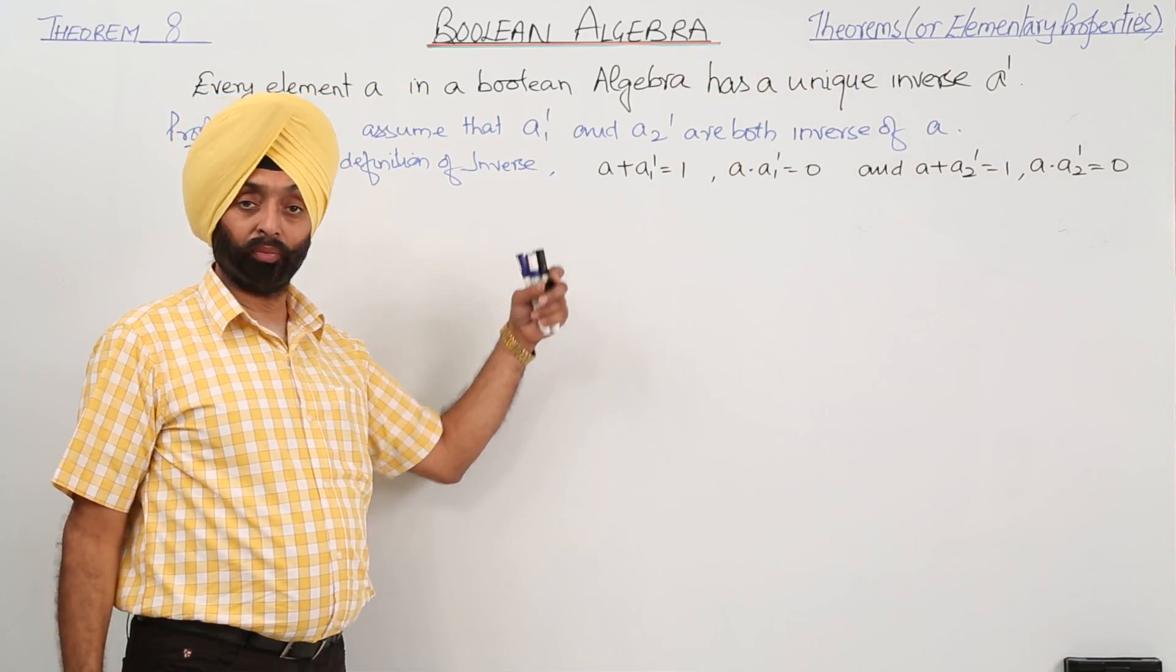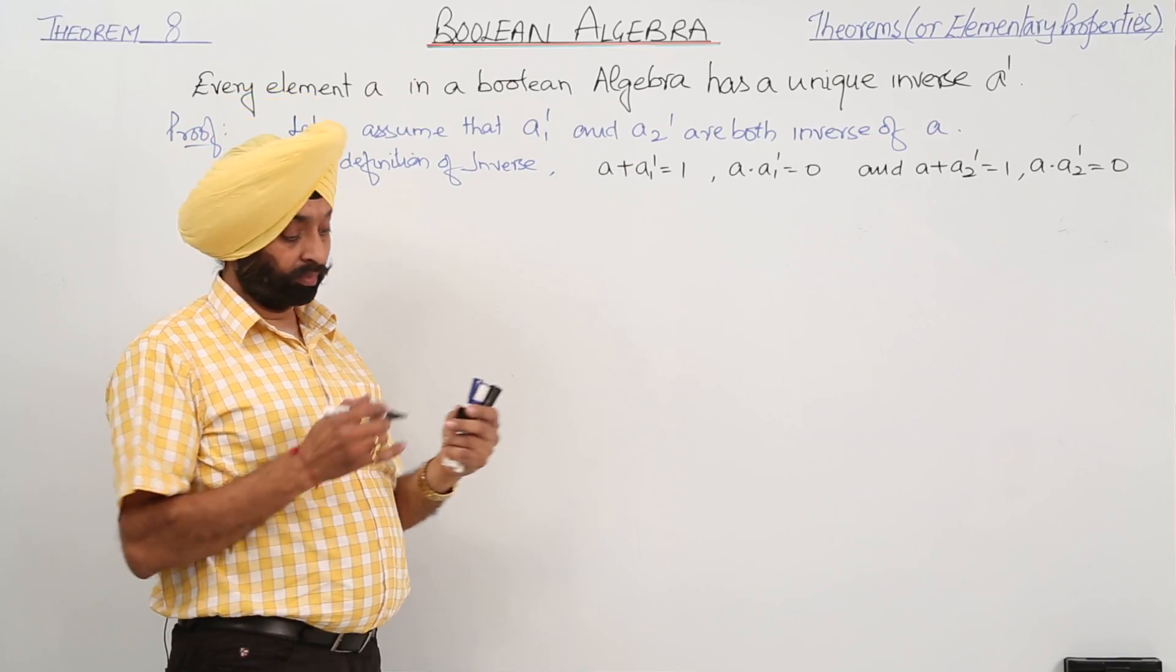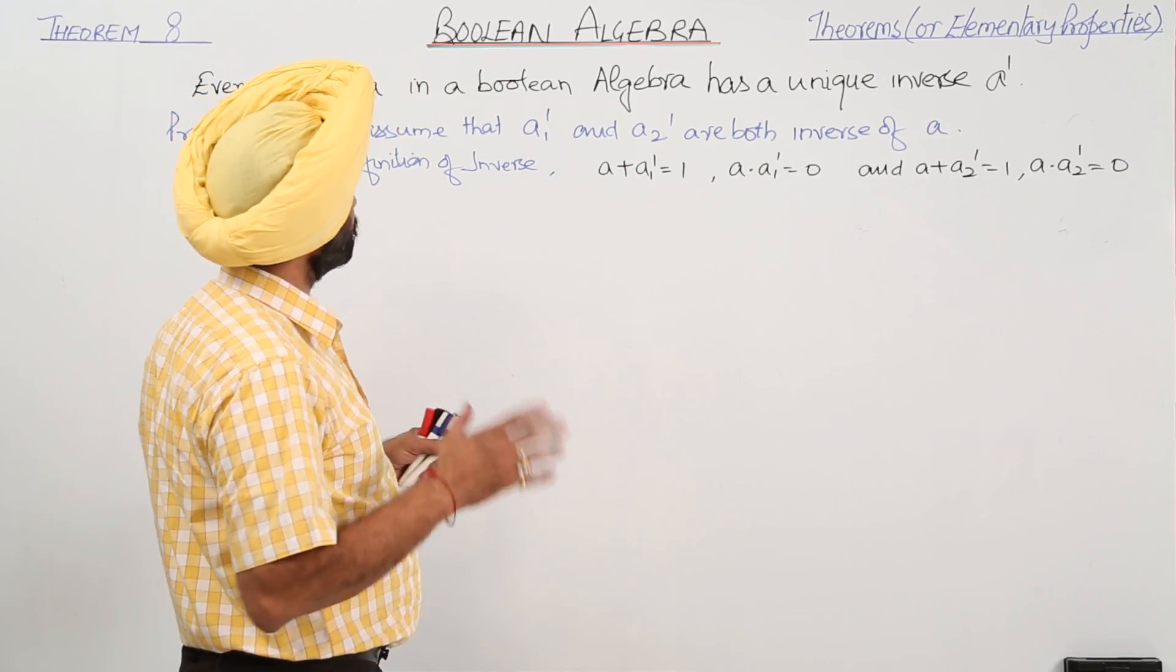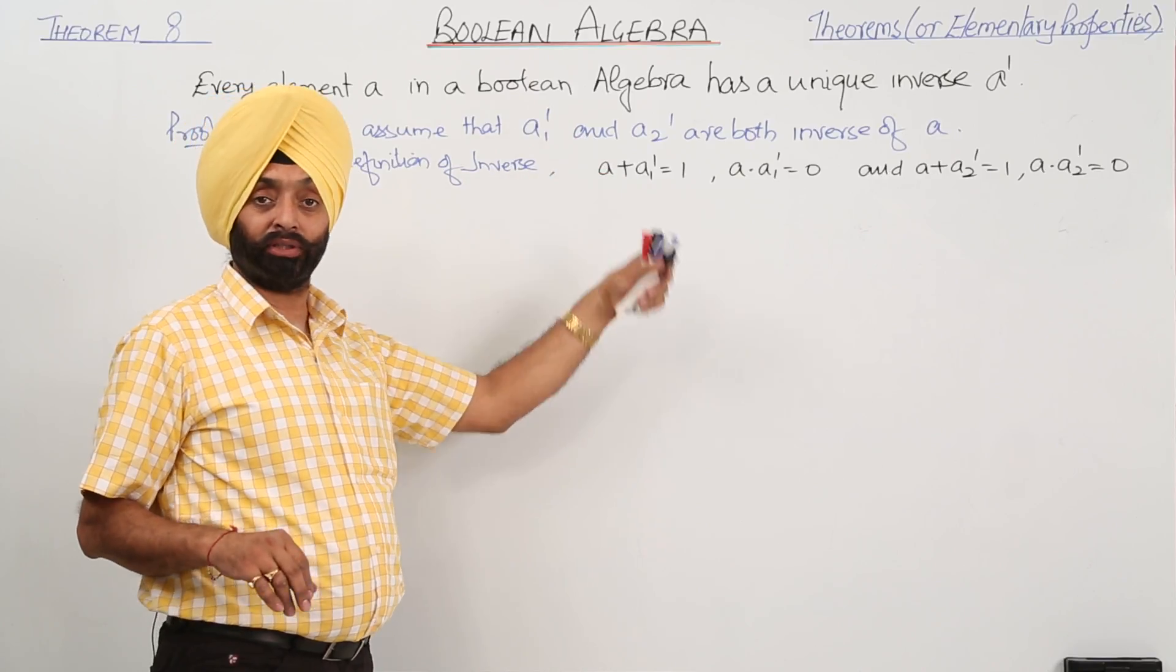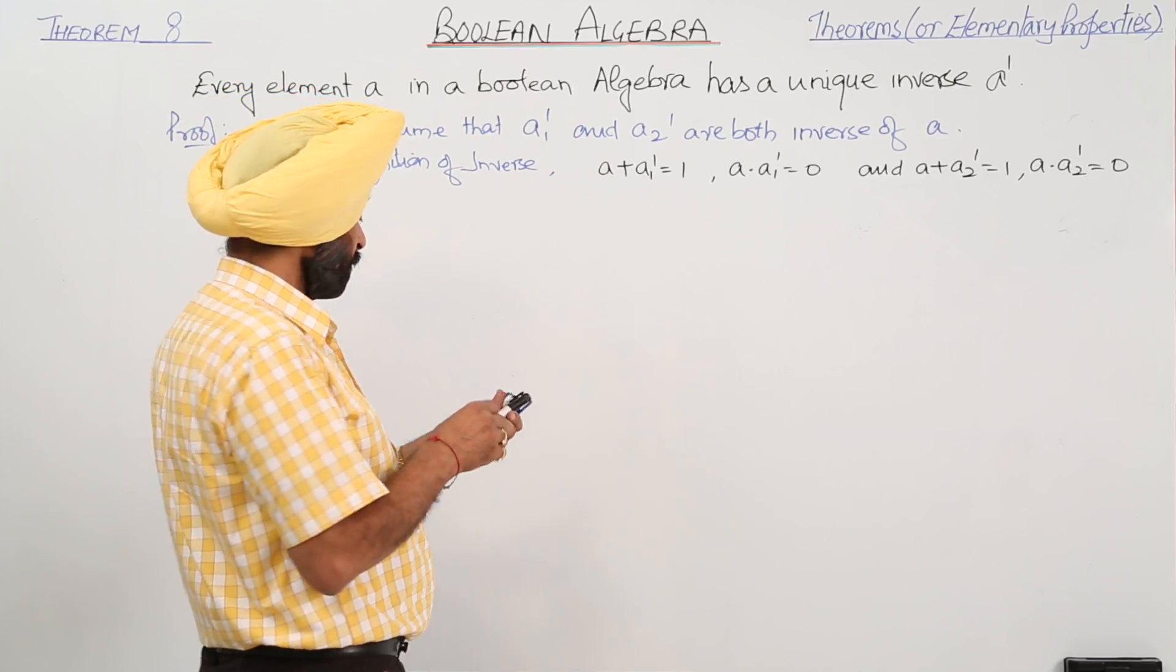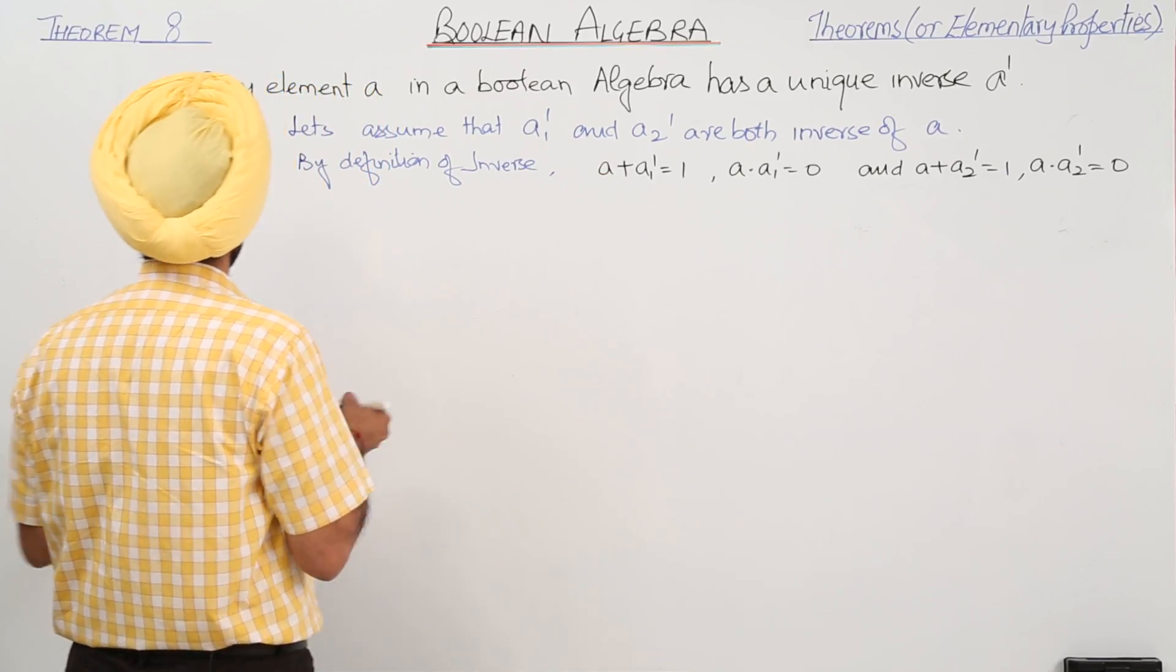One single property applying for two inverses. Now what we have to prove? The basic thing is we have to prove that A1 inverse equals A2 inverse. So now let's start with the proof.